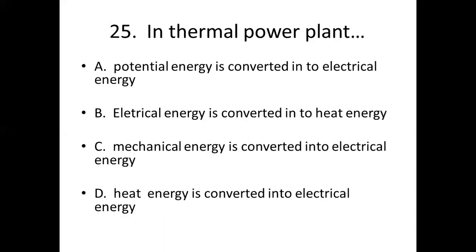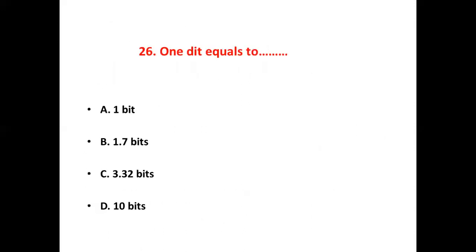Twenty-fourth bit: Space required for a steam power station — Option A: more than diesel power station. Option B: equal to diesel power station. Option C: less than diesel power station. Option D: none of the above. Answer: Option A, more than diesel power station.